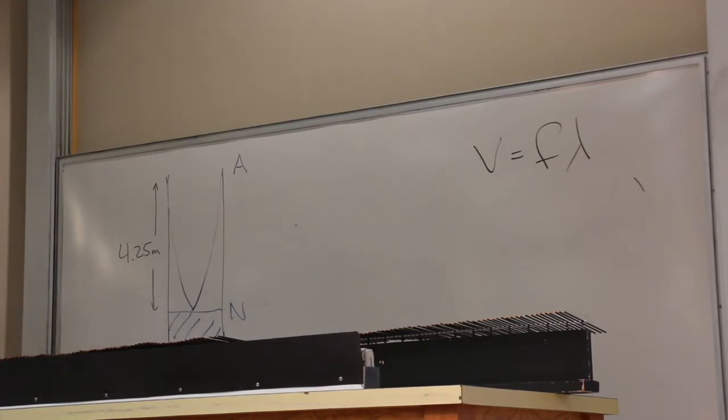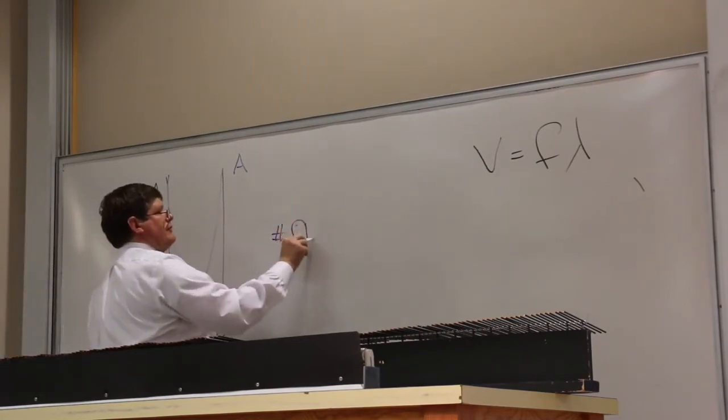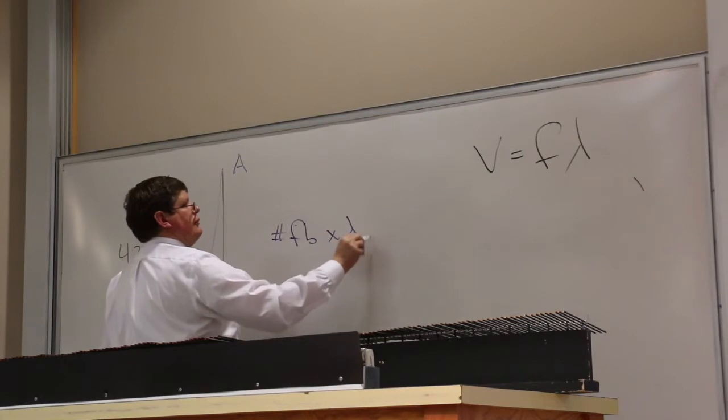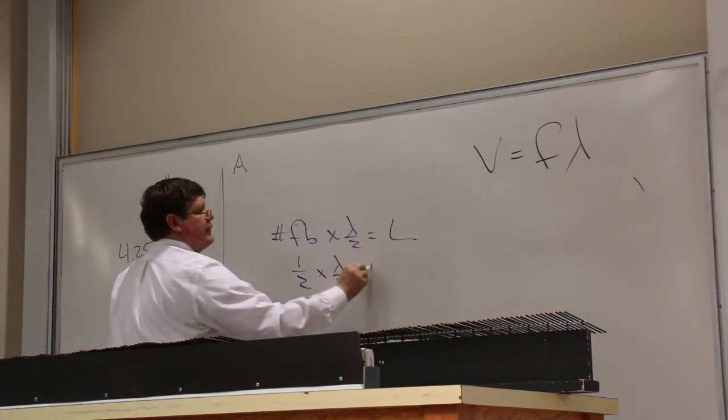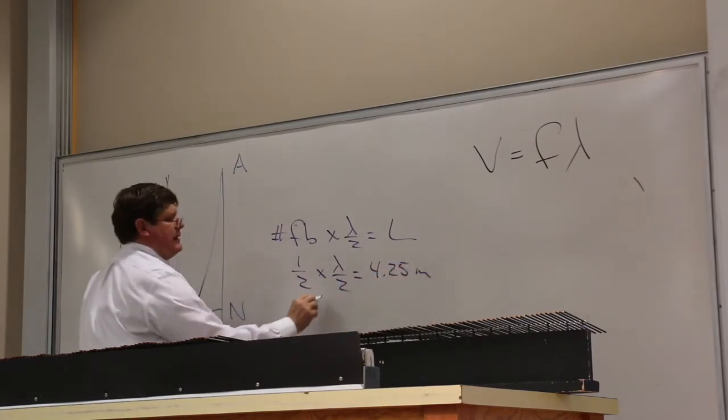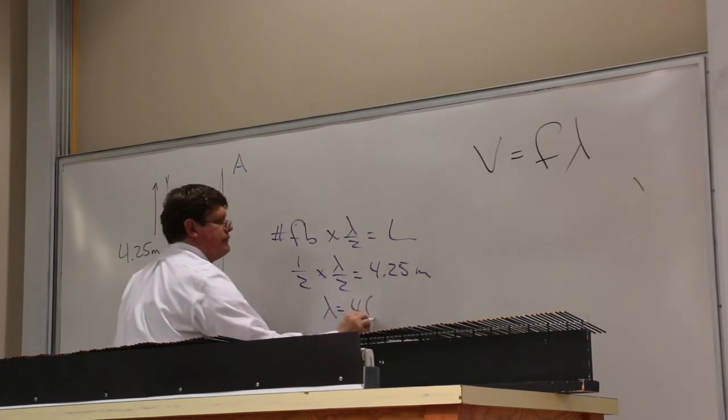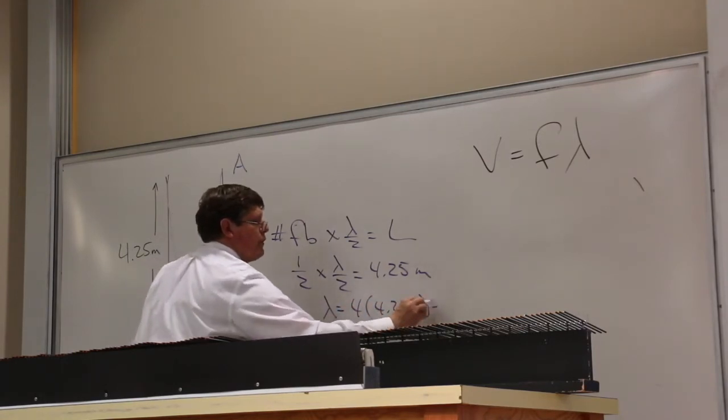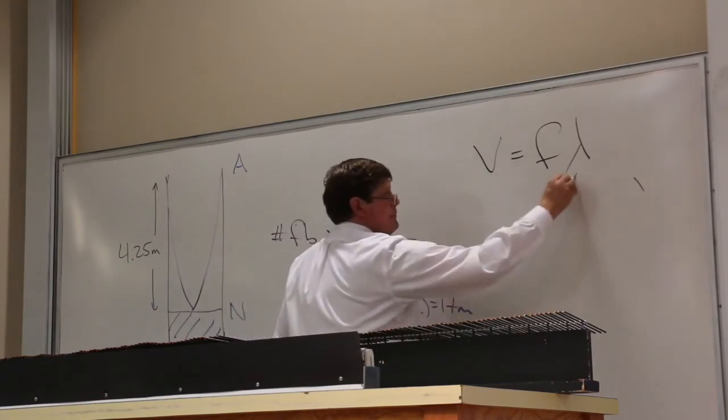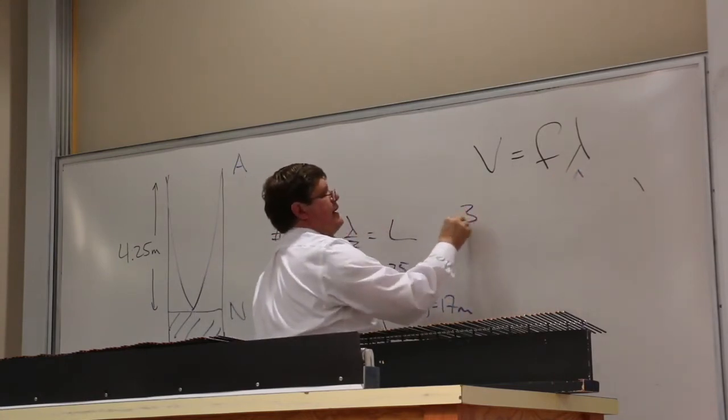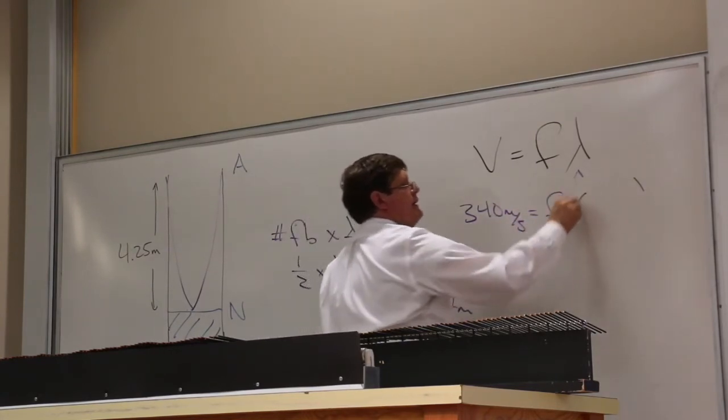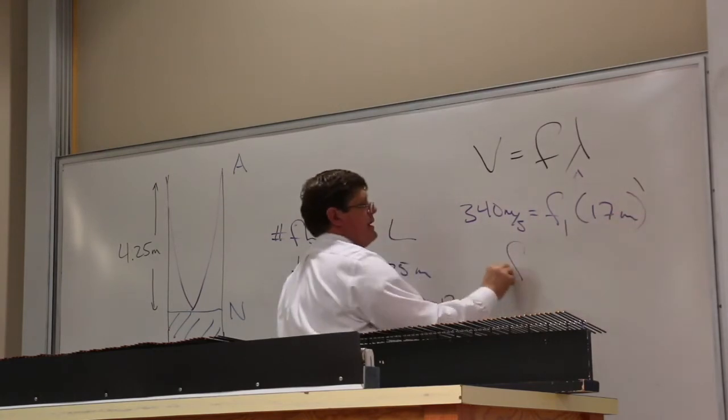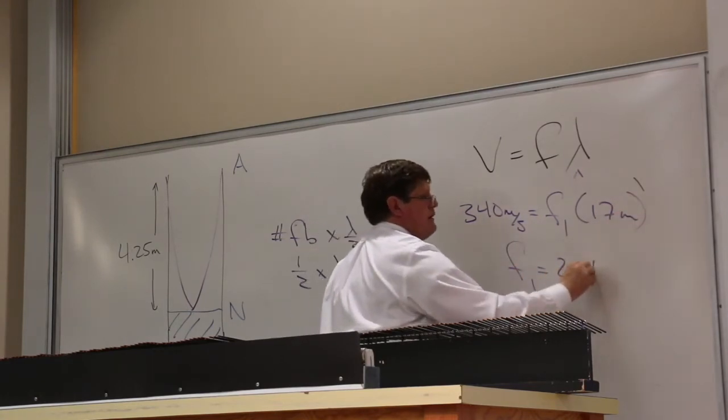If that didn't speak to your soul, just use this equation. The number of footballs times lambda over 2 is equal to the length of the system. I've got half a football there times lambda over 2 is equal to 4.25 meters. That means lambda is equal to 4 times 4.25 meters, or 17 meters. I bring that up here, and I say 340 meters per second is equal to F1 times 17 meters. That gives me F1 is equal to 20 hertz.